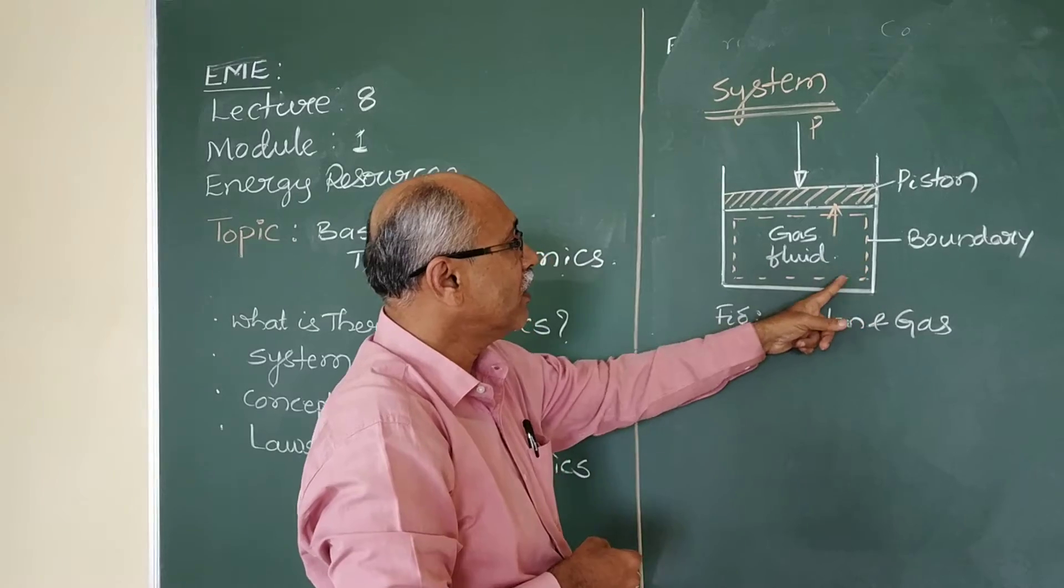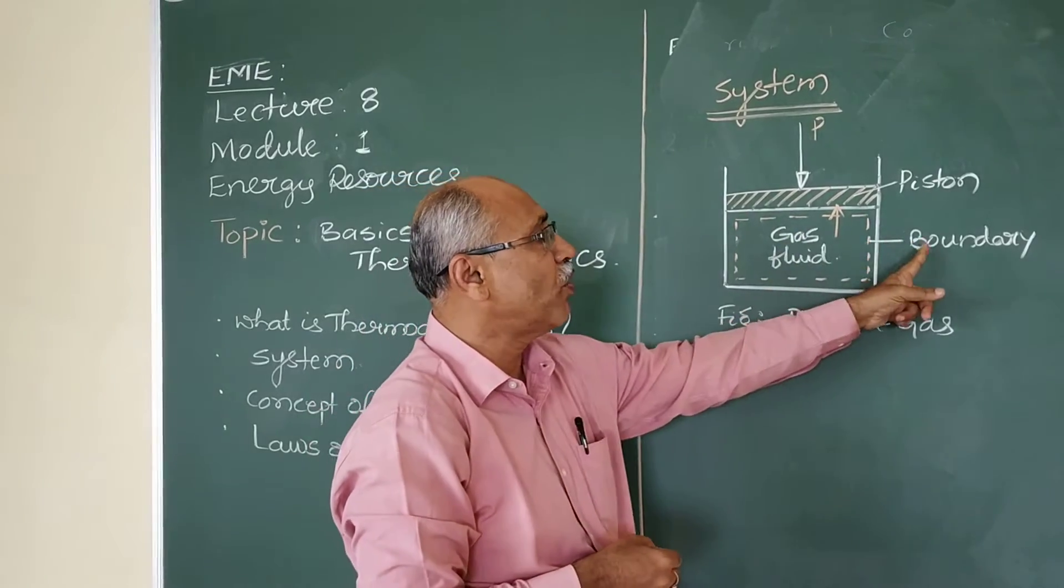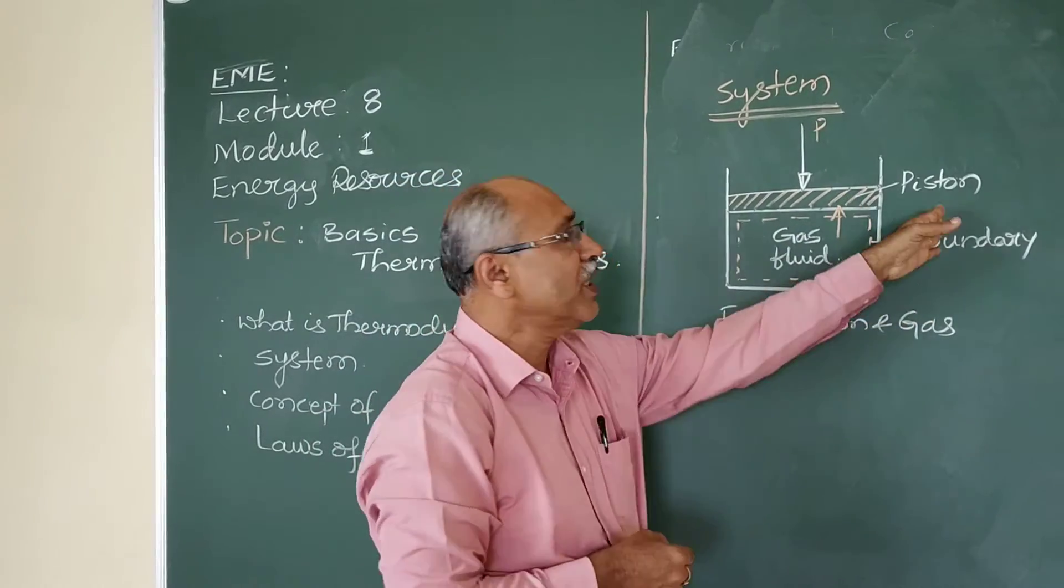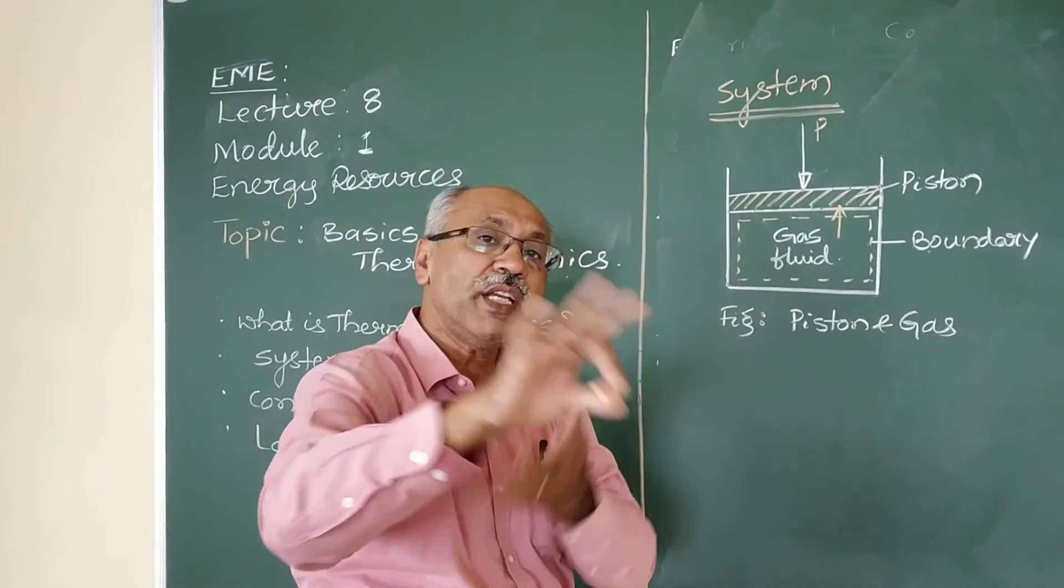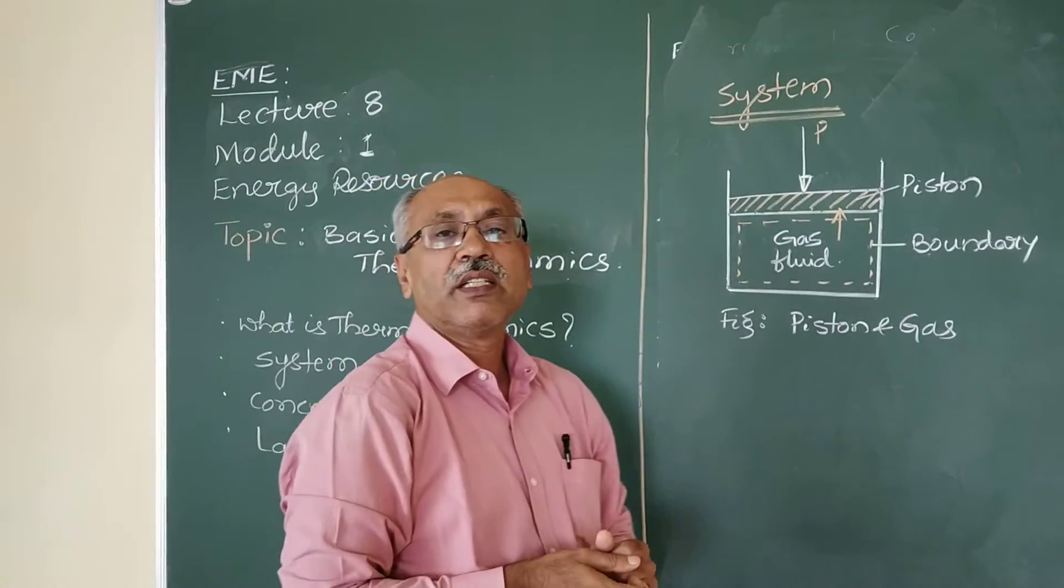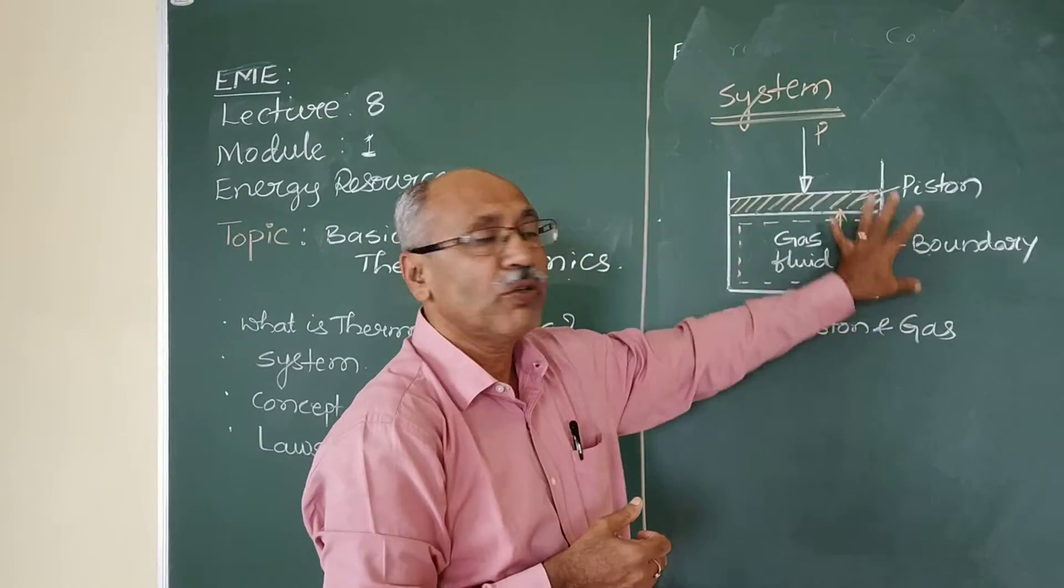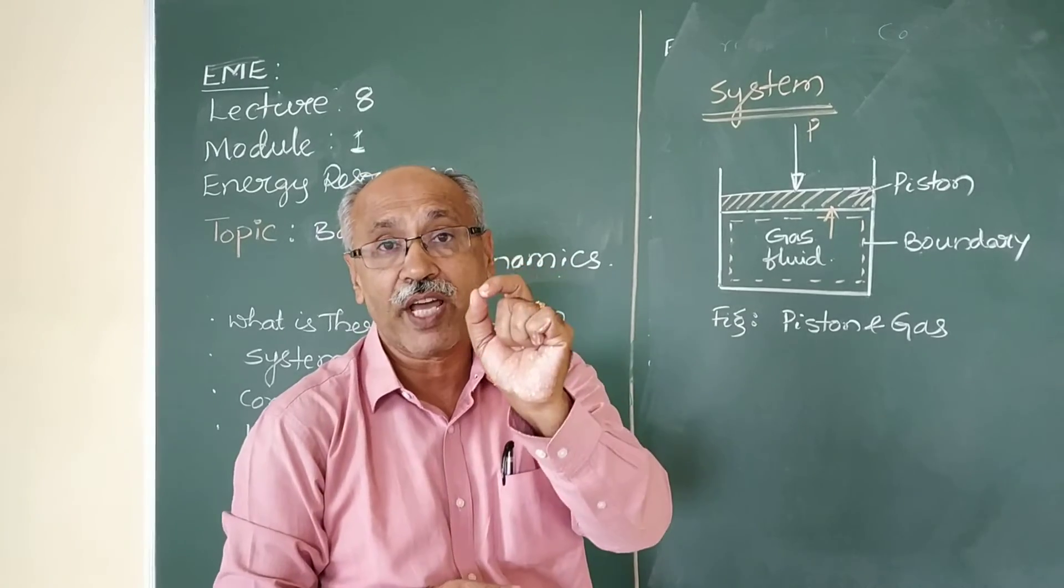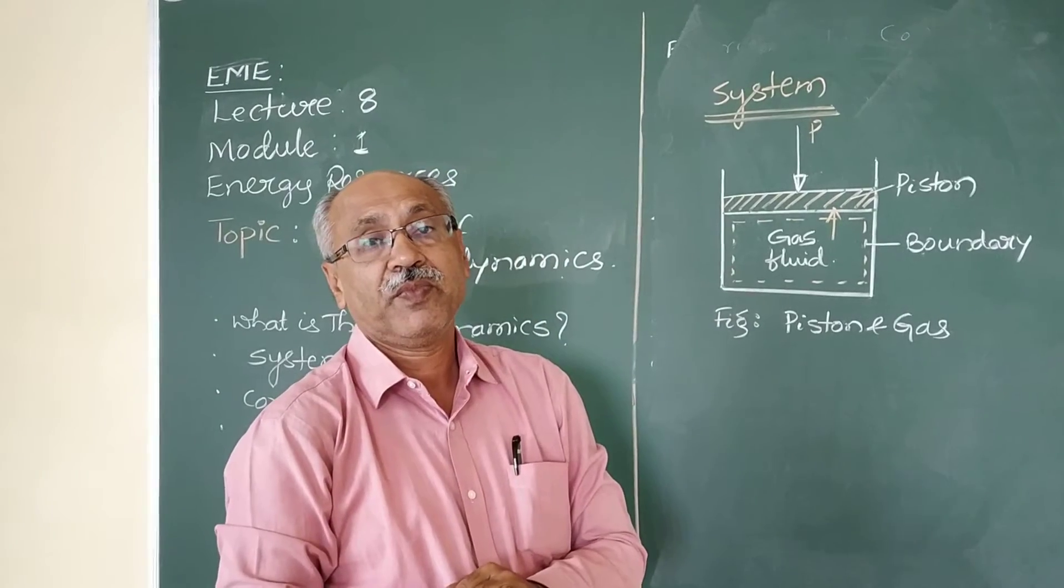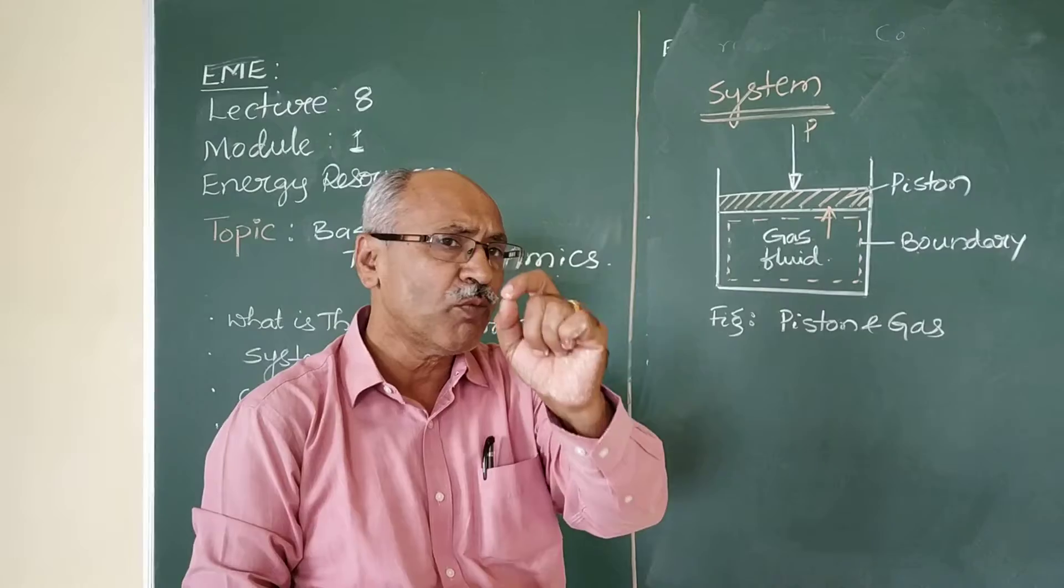And this dotted line of the system is known as boundary. Anything outside the boundary is called as surroundings. Anything inside the boundary is called matter. And this whole together constitutes a system. That is known as thermodynamic system.